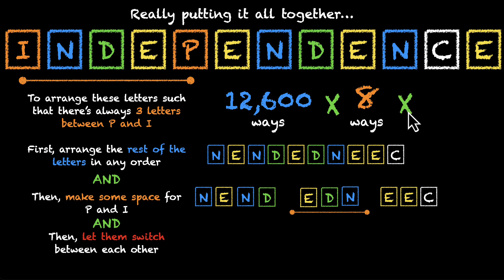We have to do this, and we have to do the third part. We have to let them switch between each other. We have to add back P and I. And there are two ways to do that. We can put I first and then P, or we can put P first and then I. So there are two ways to do the third part.